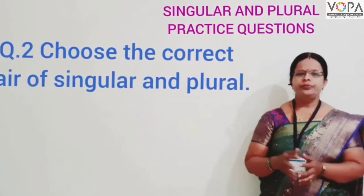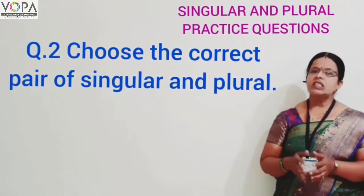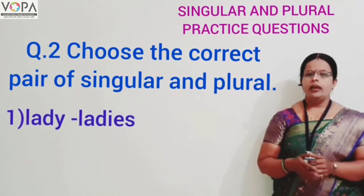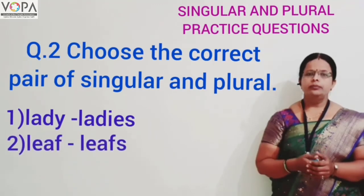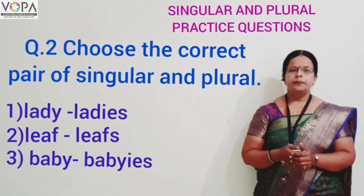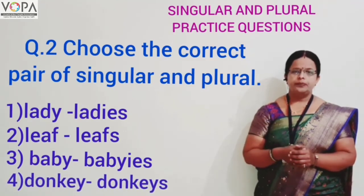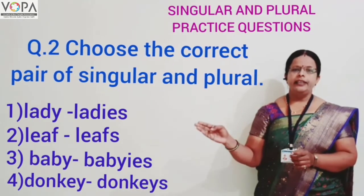Question number two: choose the correct pair of singular and plural. Option one: lady, ladies. Option two: leaf, leaves. Option three: baby, babies. And option four: donkey, donkeys. The correct answer is option number one — lady, ladies.